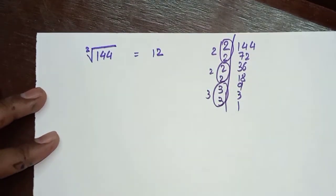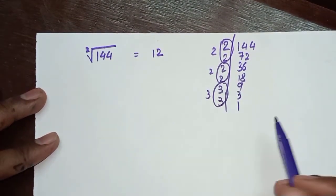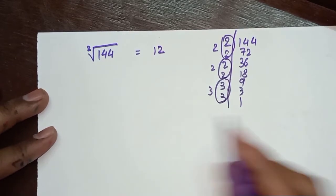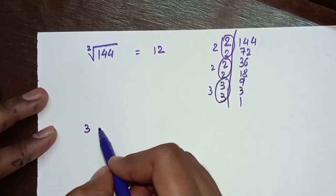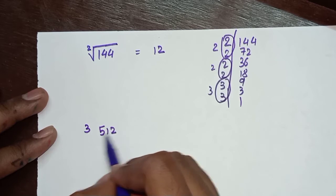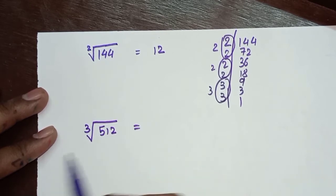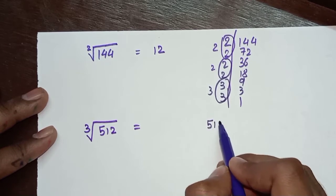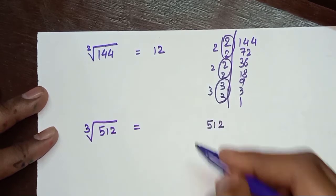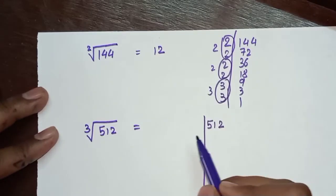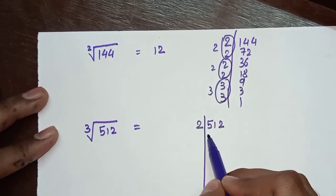When you want to find cube root - for example, cube root of 512 - you can take any examples now. That shortcut you already know from previous videos. I will show you the traditional way of factorizing. So we start with 2 only.